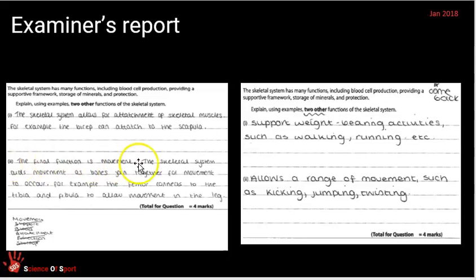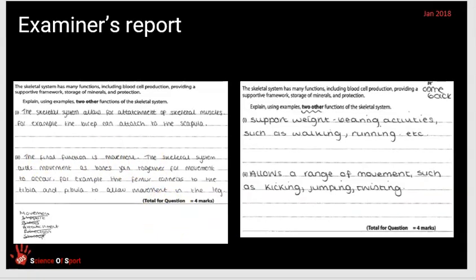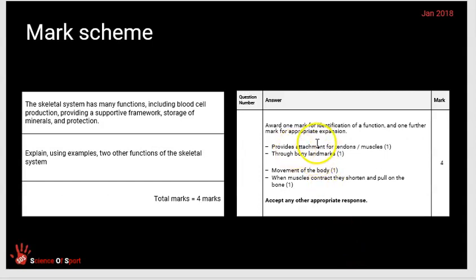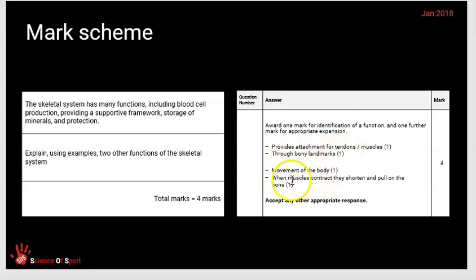Examples of student responses are shown here, taken from the examiner's report. The two missing functions were attachment for tendons/muscles and movement. The mark scheme awards a mark for each function plus an example: providing attachment for muscles through bony landmarks developed with an example, and movement of the body when muscles contract as the second example. Pause the video to review both student responses and consider why marks were gained or lost.